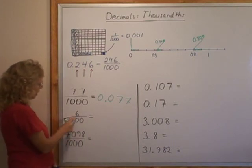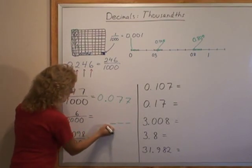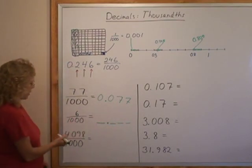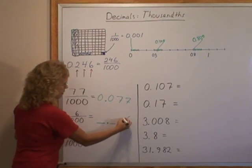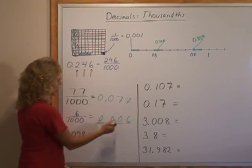Similarly here I have thousand as a denominator. I will need three decimal digits here. Then my decimal point. So the six goes way over here and zeros everywhere else. 0.006 is 6 thousandths.